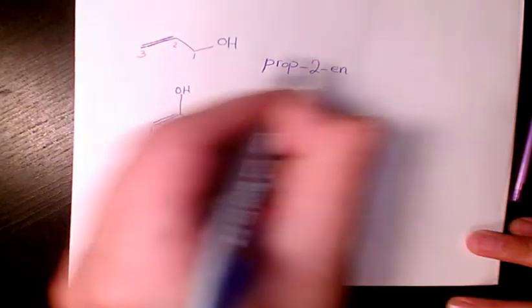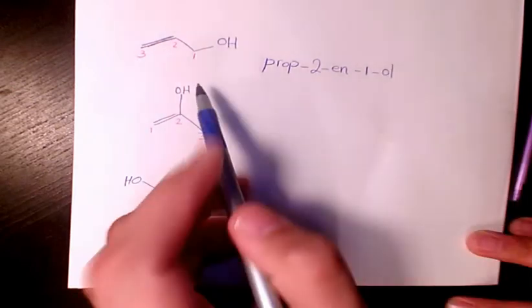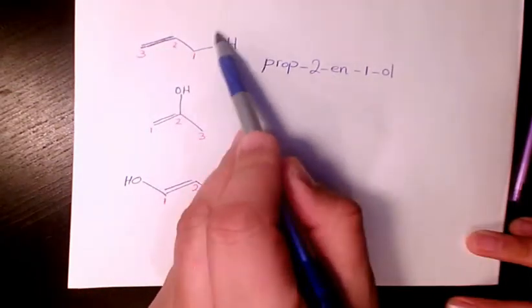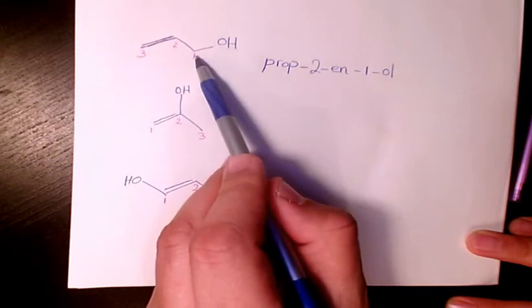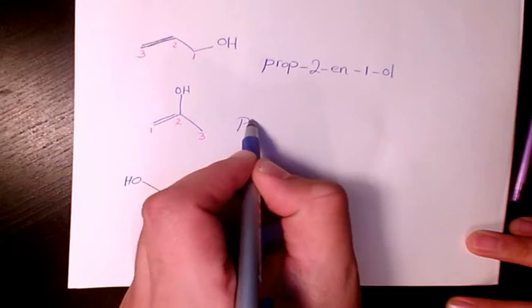en-1-ol. Prop-2-en-1-ol, because it's an alkene with the hydroxyl group connecting to carbon one, and the double bond is at carbon two. Next one is going to be prop-